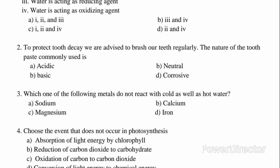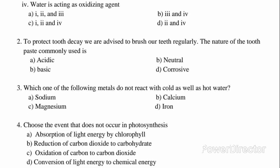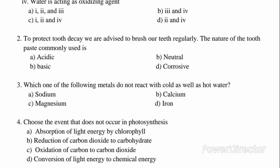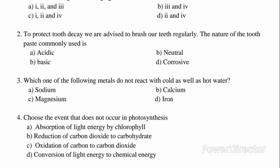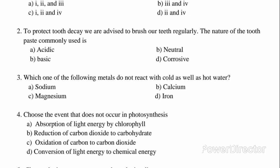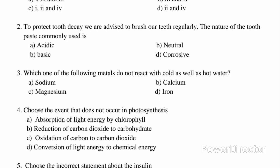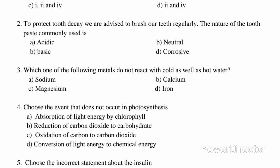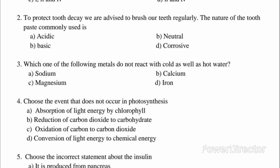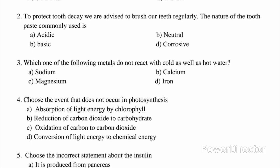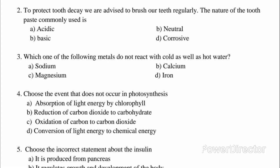Question 4: Choose the event that does not occur in photosynthesis. A. Absorption of light energy by chlorophyll. B. Reduction of carbon dioxide to carbohydrate. C. Oxidation of carbon to carbon dioxide. D. Conversion of light energy to chemical energy. Answer: C. Oxidation of carbon to carbon dioxide.